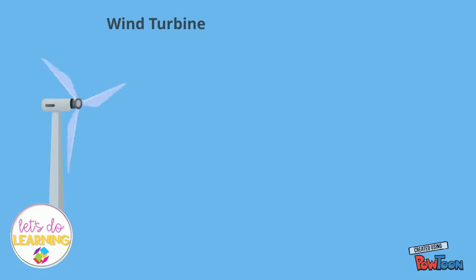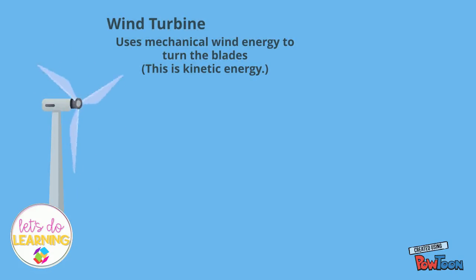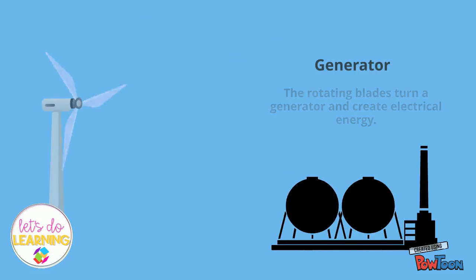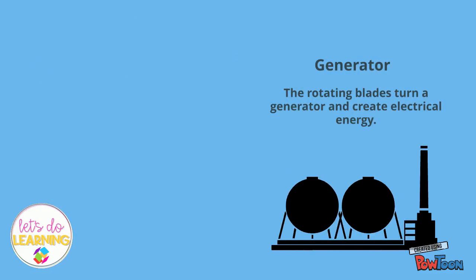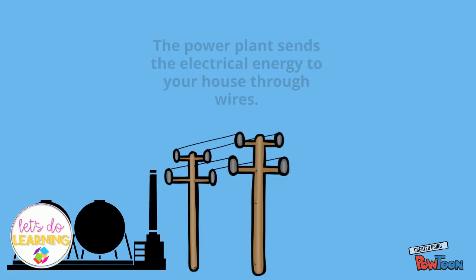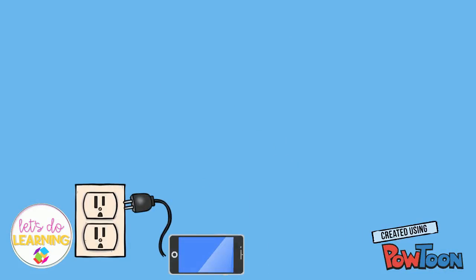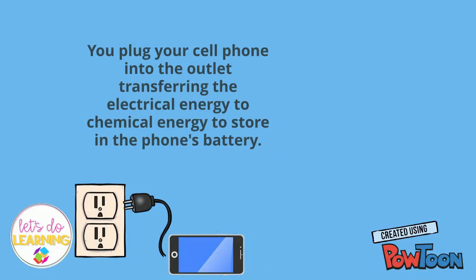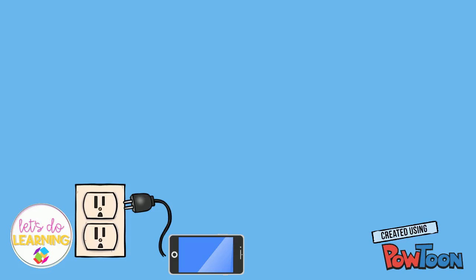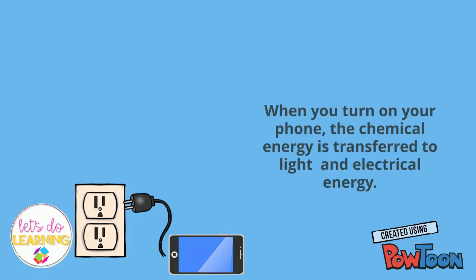Now let's talk about how you get energy to your house. A wind turbine uses mechanical wind energy to turn the blades — that is kinetic energy. The rotating blades turn a generator and create electrical energy at a power plant. The power plant sends the electrical energy to your house through wires. Then you plug your cell phone into the outlet, transferring the electrical energy to chemical energy to store in the phone's battery. When you turn on your phone, the chemical energy is transferred to light and electrical energy.